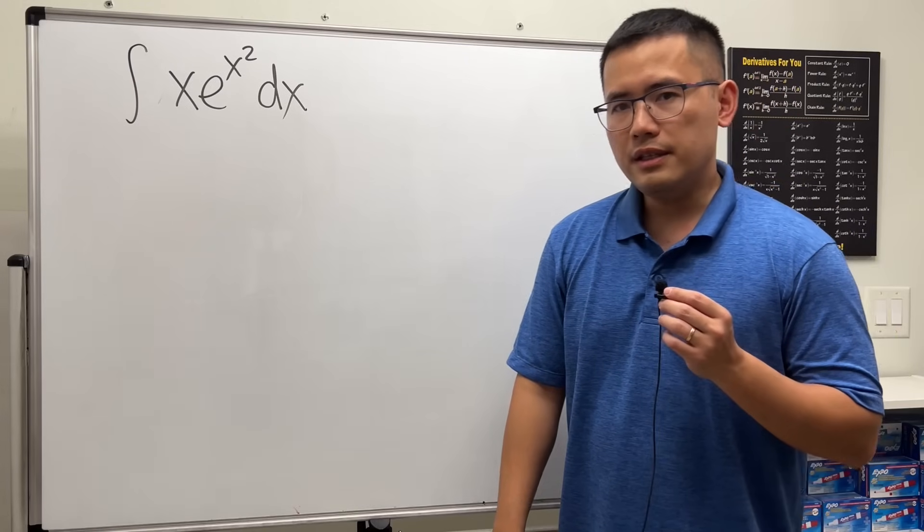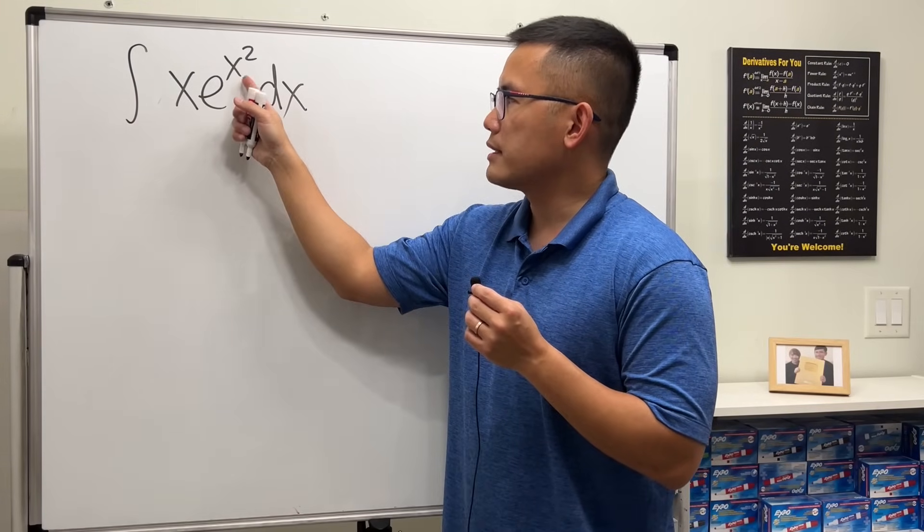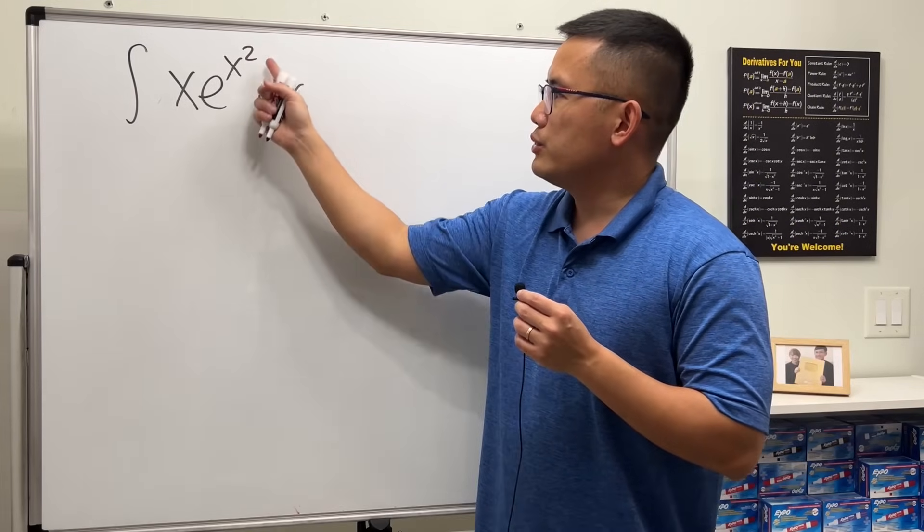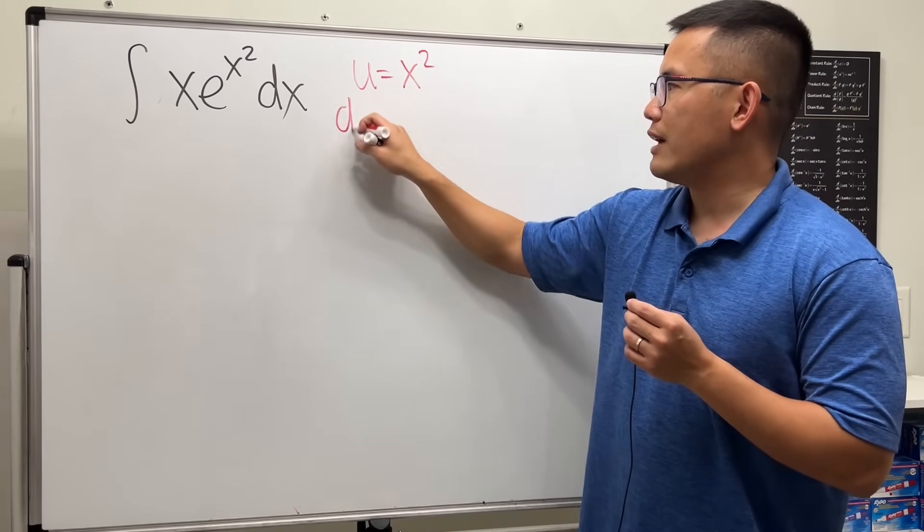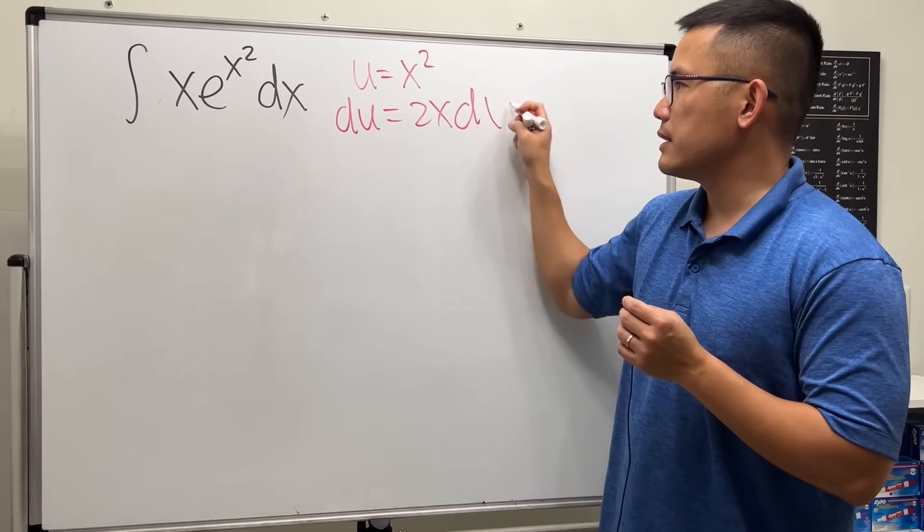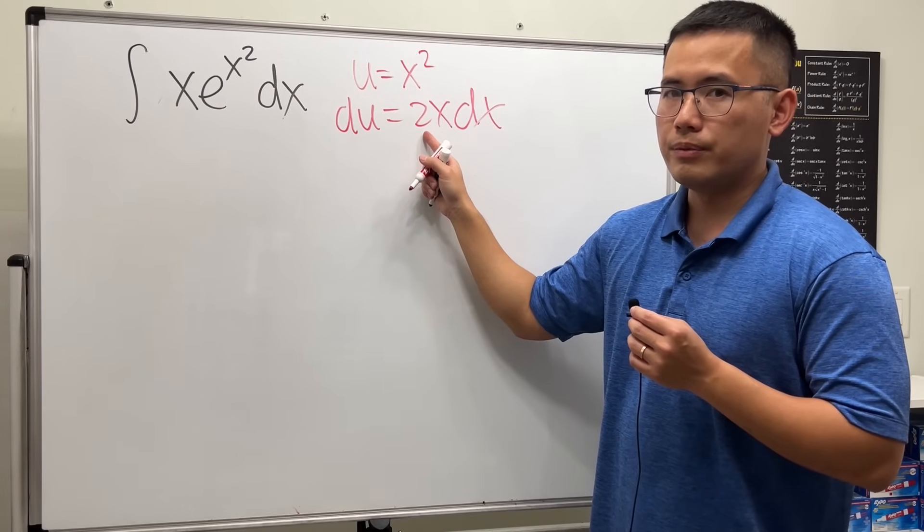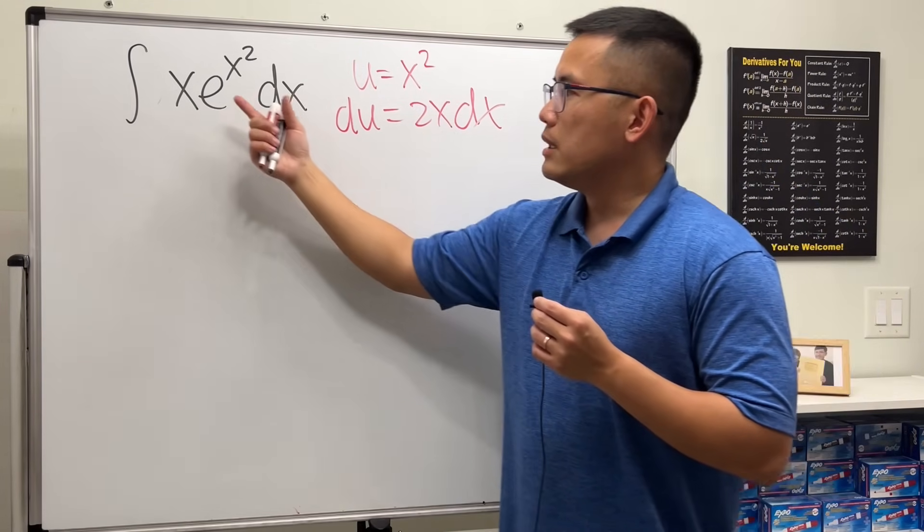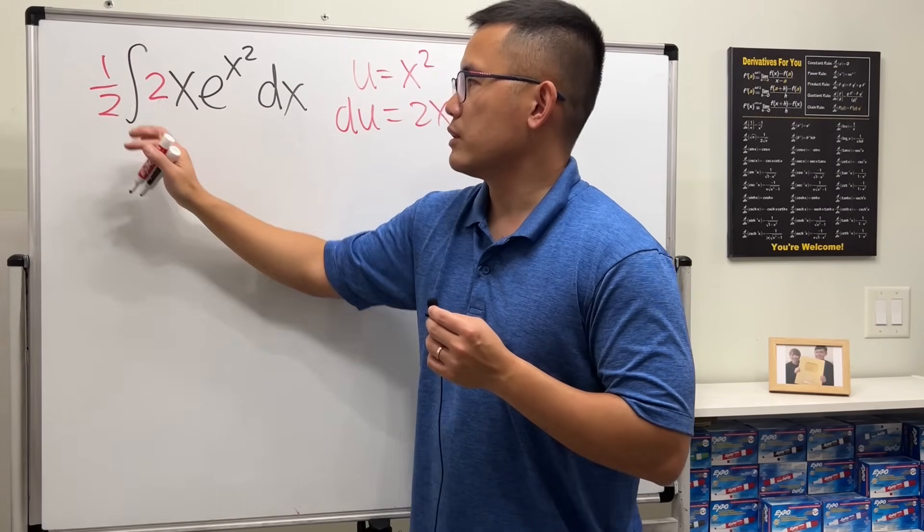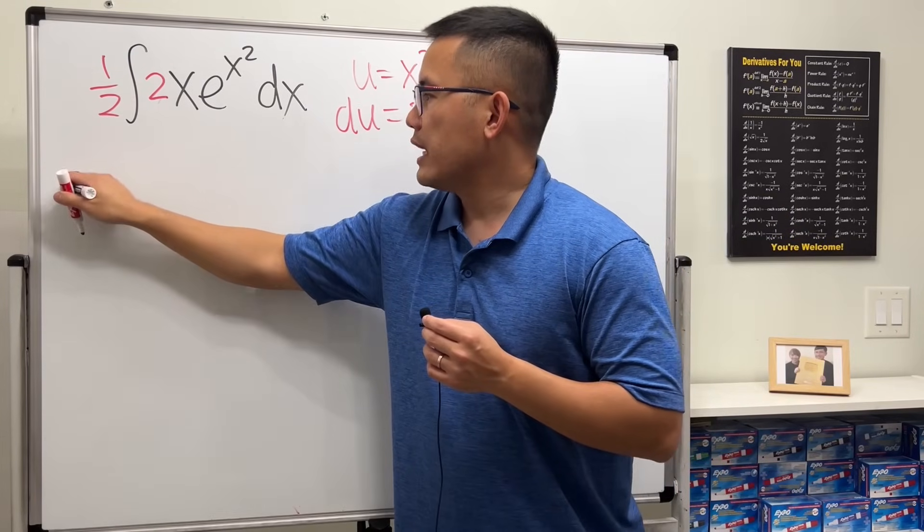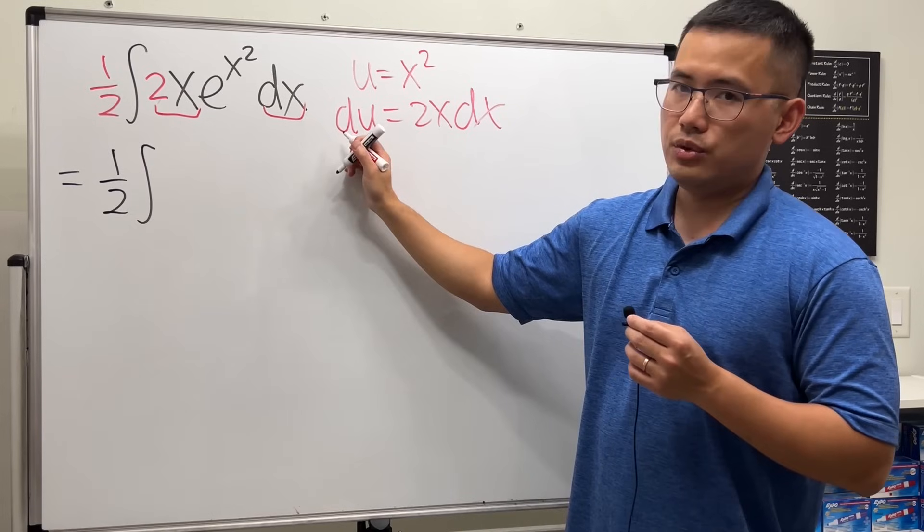Day two. Today's topic is called u-substitution. Here's the example: we are going to integrate x times e to the x squared power. Pay attention to the inner function—we have x squared. Put that to be u, and then differentiate both sides. We will have du equals 2x dx. We see that we have x dx right here, but we need to have the two so that we can get the du. So let's come here and multiply by a two, but of course we will have to divide that right away as well so that we don't change anything. We will just get one half integral—the 2x dx is the du.